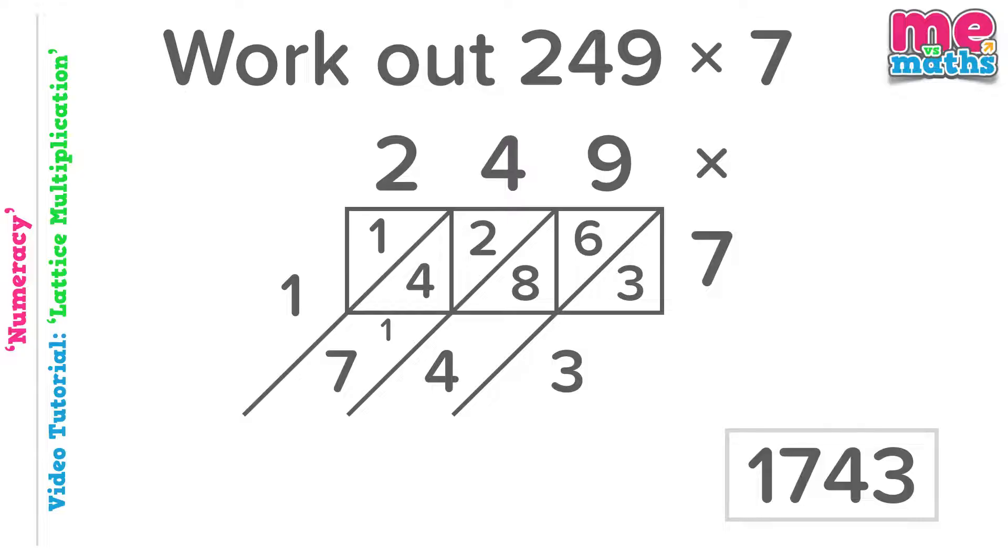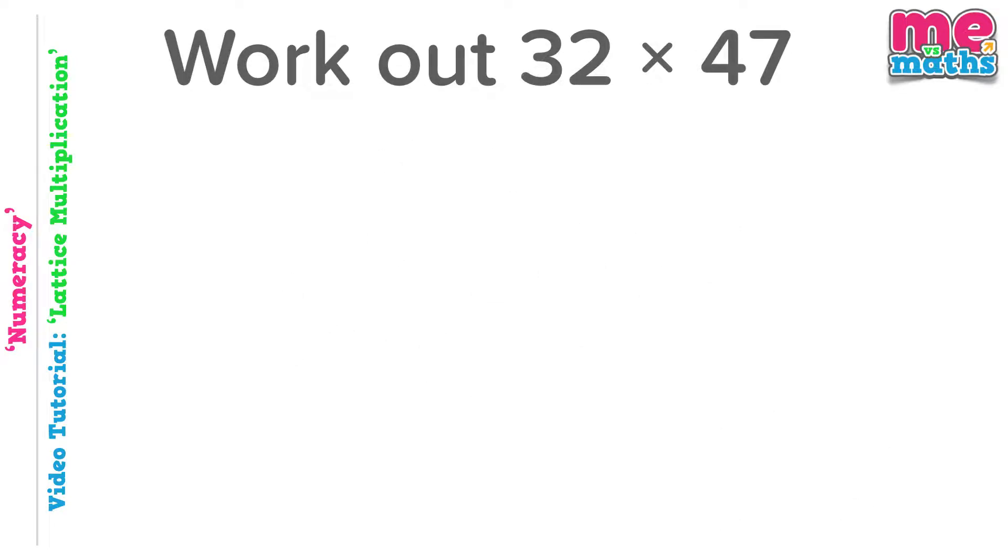Hopefully you're starting to get the hang of this now. Now often the main difficulty that students face with this method is actually drawing out these starting grids. So we're just going to look at two more variations. Here we're doing something that we're asked to do quite a lot in maths, multiplying a 2 digit number by another 2 digit number. So this time we actually want a square rather than a rectangle, and we want our square to be 2 units by 2 units.